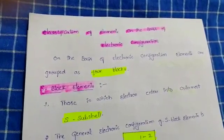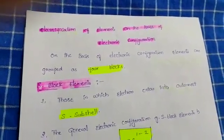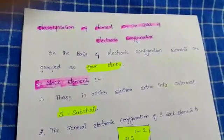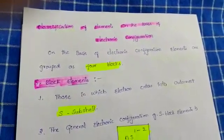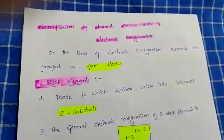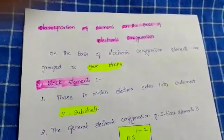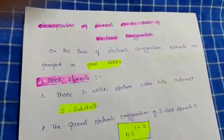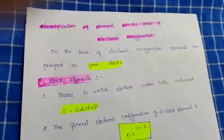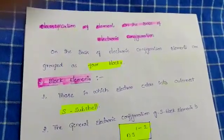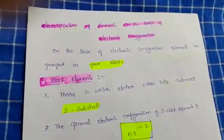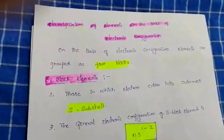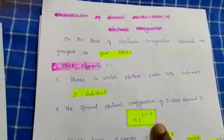First of all, we know S-block elements. Those in which electron enters into the outermost S-subshell are called S-block elements. The general electronic configuration of S-block elements is NS1 to NS2.